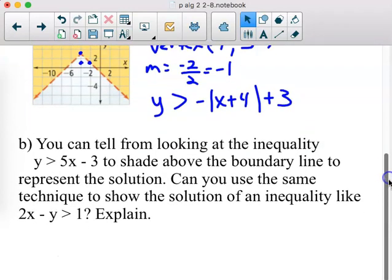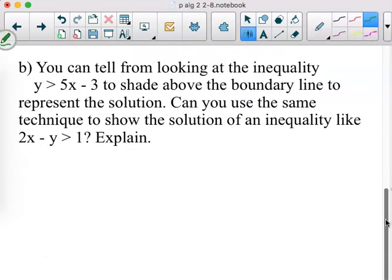So, like it says, if, and we talked about this shortcut before. If it's solved for y, and we're going to make it solve for y when we write them because we want y equals a x minus h plus k. You can tell from looking at the inequality y greater than shade above the boundary line. Can you use the same technique to show the solution of an inequality like 2x minus y is greater than 1? And the answer is no. And that's why, like I said, in the past I wanted to scrap that. But I'm kind of the only one that says let's not teach them the shortcuts. So, this is in standard form. It's not in slope intercept form. It's not the same. It doesn't work the same. So, the answer is no.